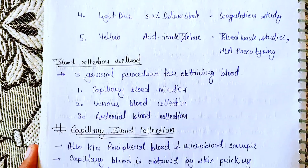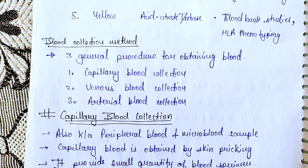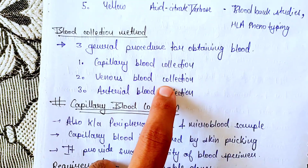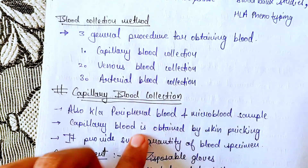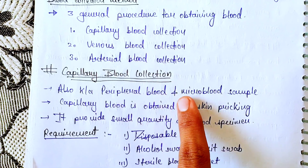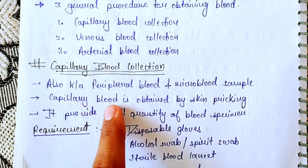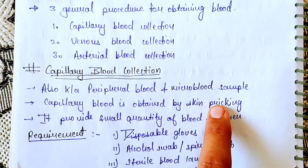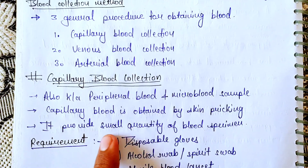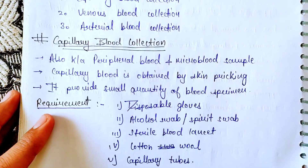Now, blood collection methods. There are three general procedures for obtaining blood: capillary blood collection, venous blood collection, and arterial blood collection. Capillary blood collection is also known as peripheral blood or micro blood sample. The capillary sample is obtained by skin pricking, which provides a small quantity of blood specimen.